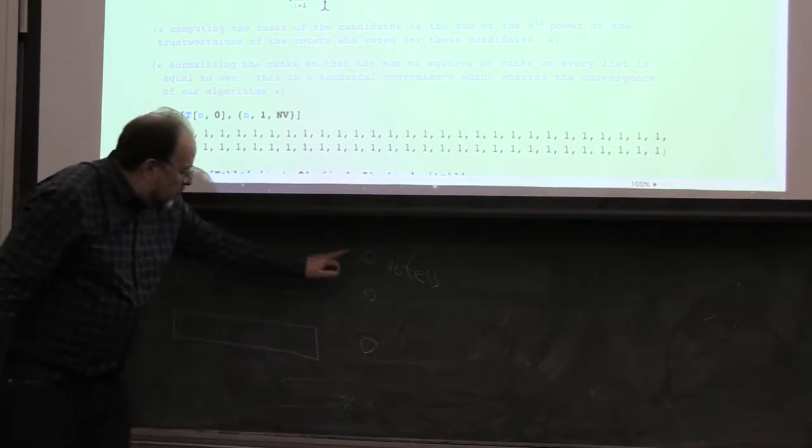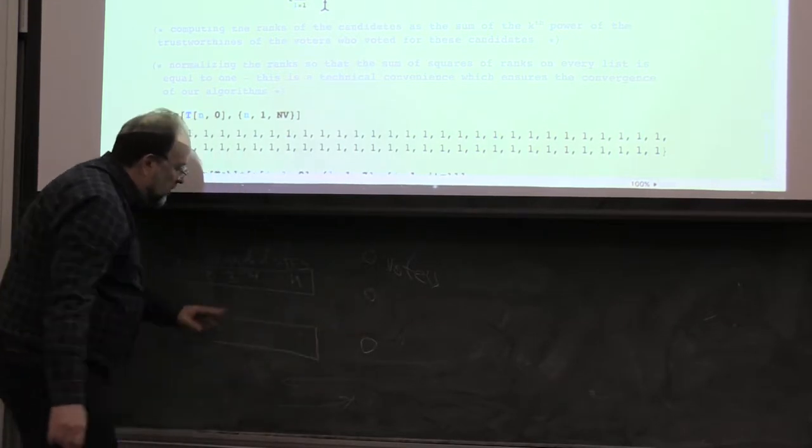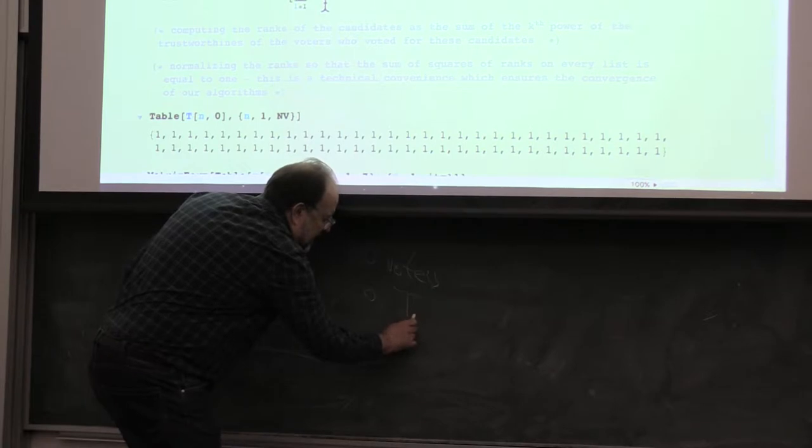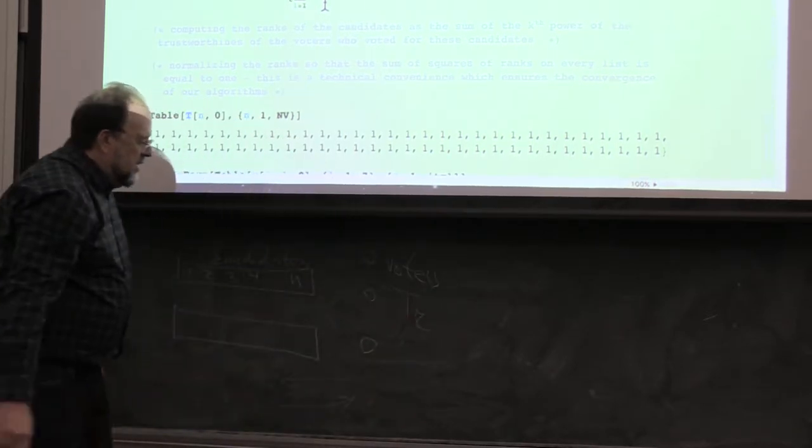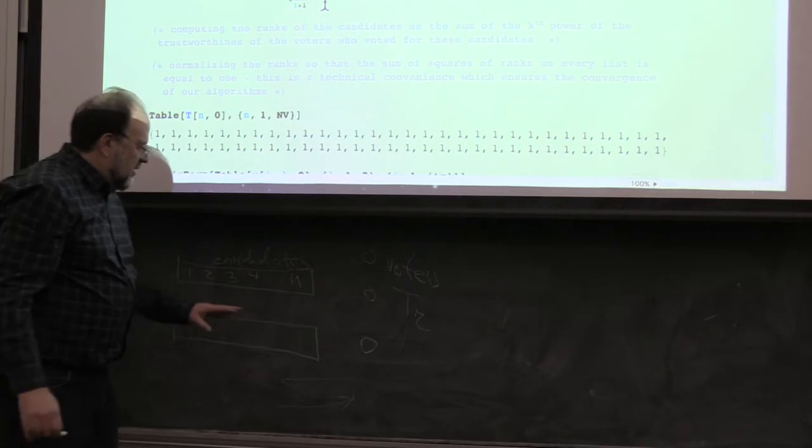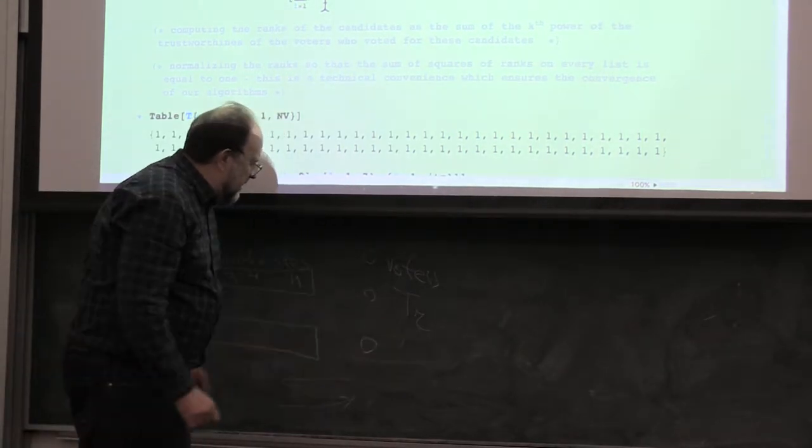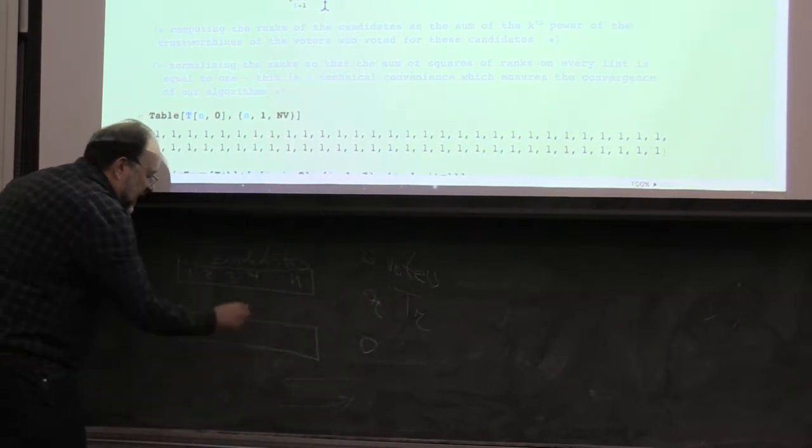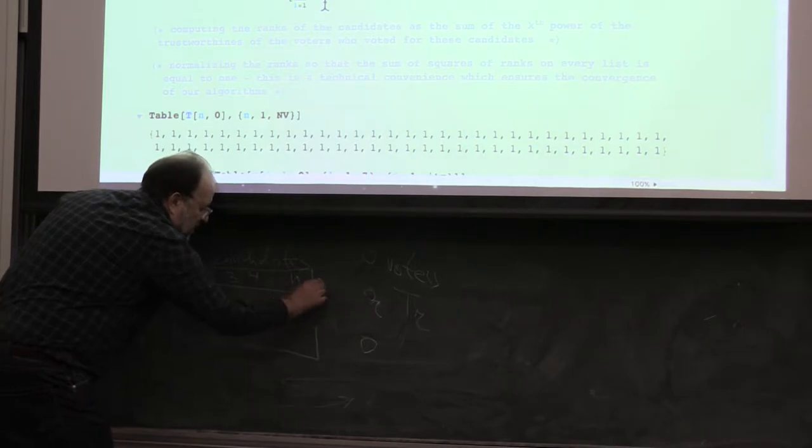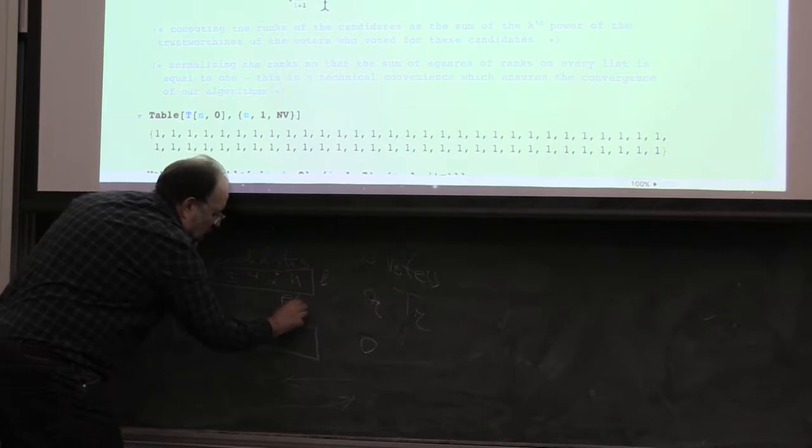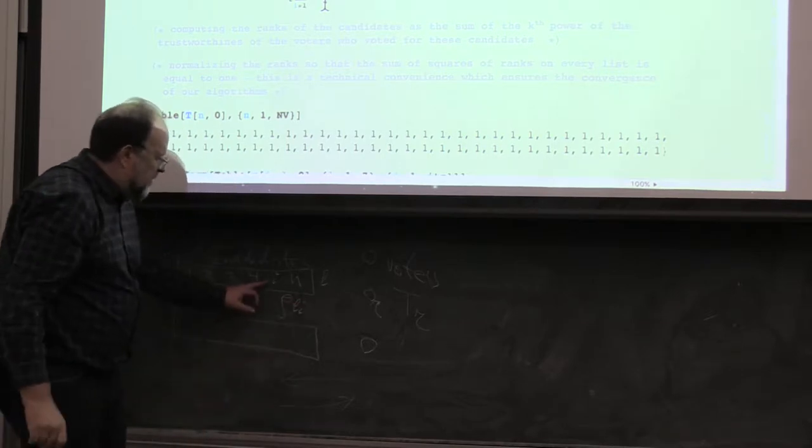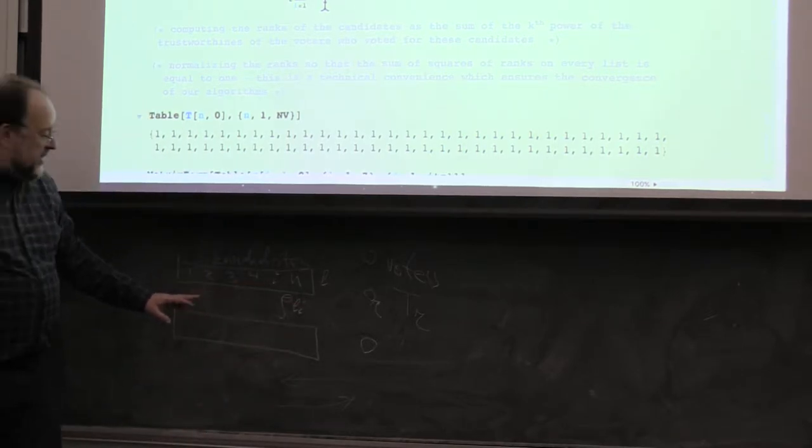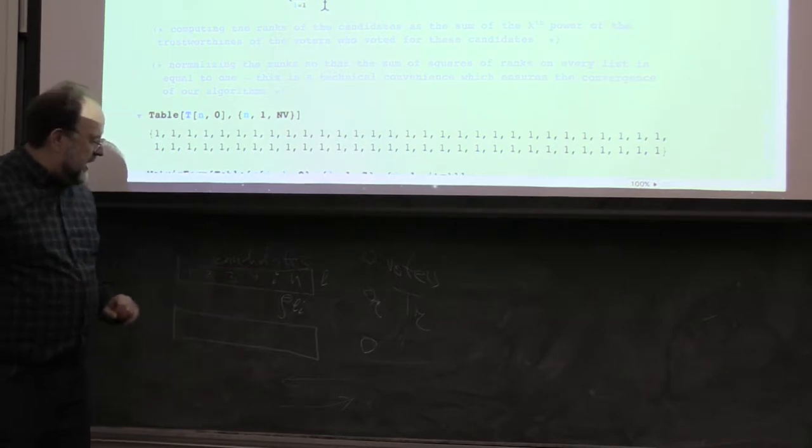So the trustworthiness of each voter, so each voter will be assigned dynamically its trustworthiness, or voter or rater TR. So if this is rater R, he will get assigned its trustworthiness, and each item here, so if this is a list L and this is item I, he will get a rho, I think I wrote it as rho substitute L, I will be the rank or the rating of this item.